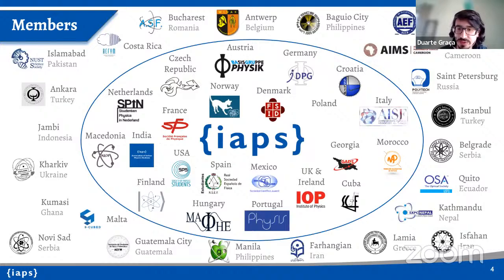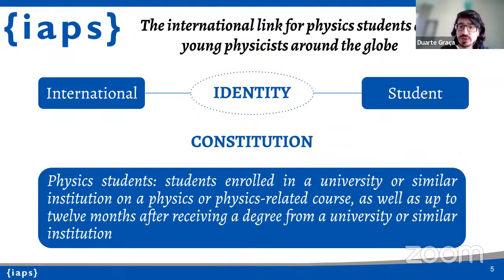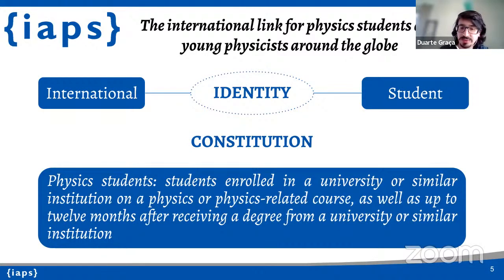This shows the logos of current members: over 20 national committees — national physics student organizations — over 20 local committees, and of course many individual members. In terms of identity, it's a student organization at the international level, consisting of physics students and students of related courses. Students who graduate can still be part of IAPS for up to about a year after graduating.